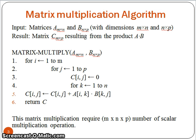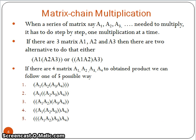As you know, if we consider two matrices A and B with dimensions m×n and n×p, the resultant matrix C will be of dimension m×p. To get that C matrix, we have to perform n×m×p number of scalar operations. And instead of just two matrices A and B, if we have a series of matrices a1, a2, a3, a4, and so on, the number of scalar multiplications will vary a lot.